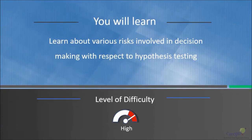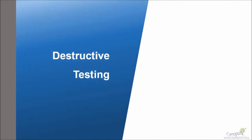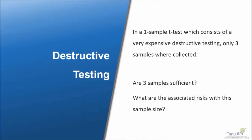In this lecture we will learn about the various risks involved in decision making with respect to hypothesis tests. Consider a scenario: in a one-sample t-test involving very expensive destructive testing, only three samples were collected. Are these three samples sufficient? What are the risks associated with this sample size? It is quite common in business that data has already been collected, and then you are asked to perform the hypothesis test — is that sample sufficient, and if so, what are the risks involved?